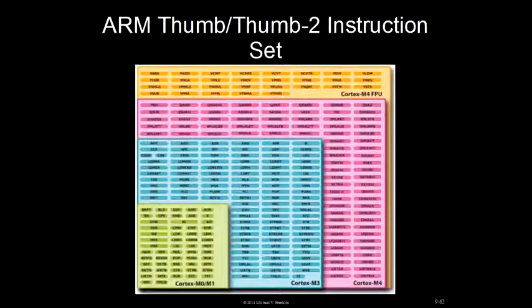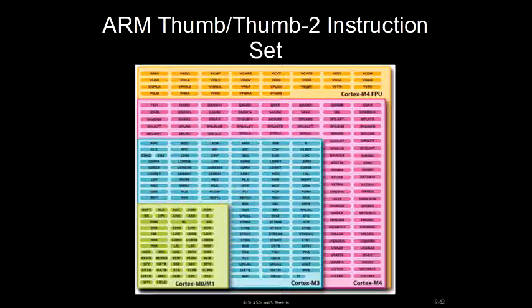The ARM Cortex-M microcontroller uses the Thumb and Thumb2 instruction set. Thumb is 16-bit; Thumb2 is a combination of 16-bit and 32-bit instructions. The Cortex-M0 through Cortex-M4 are shown here. The pink instructions are SIMD instructions for digital signal processing, and the Cortex-M4 also has an FPU for floating point instructions.